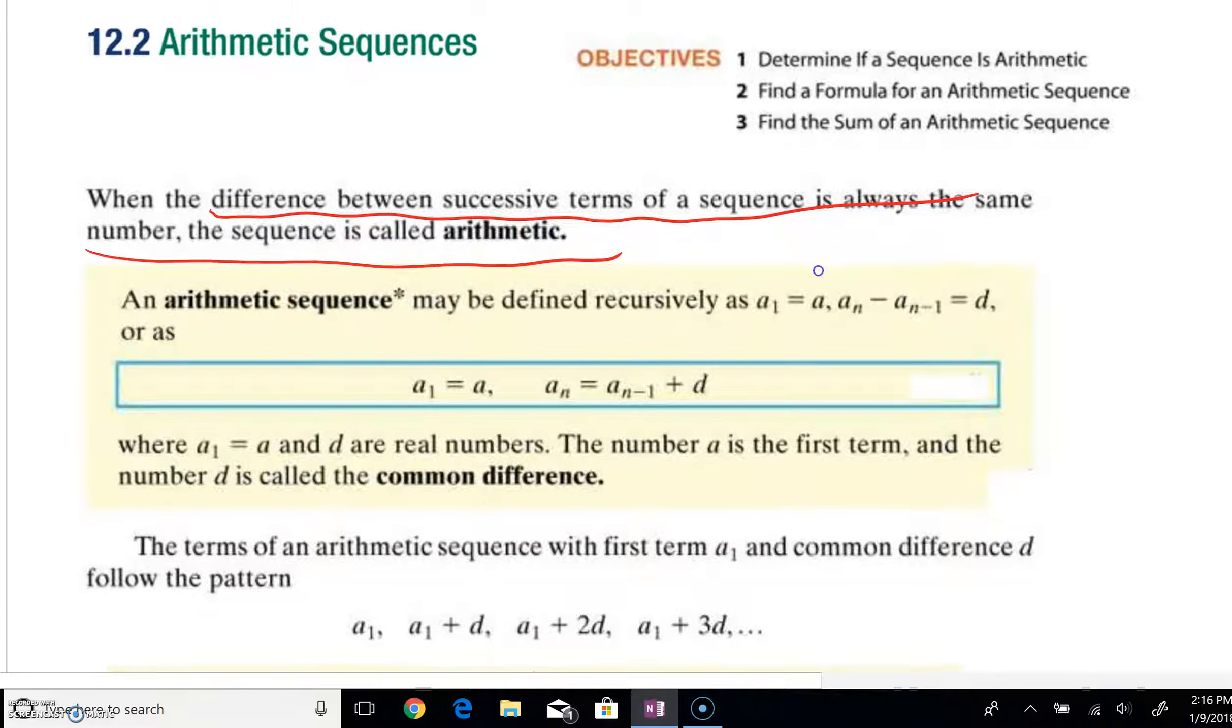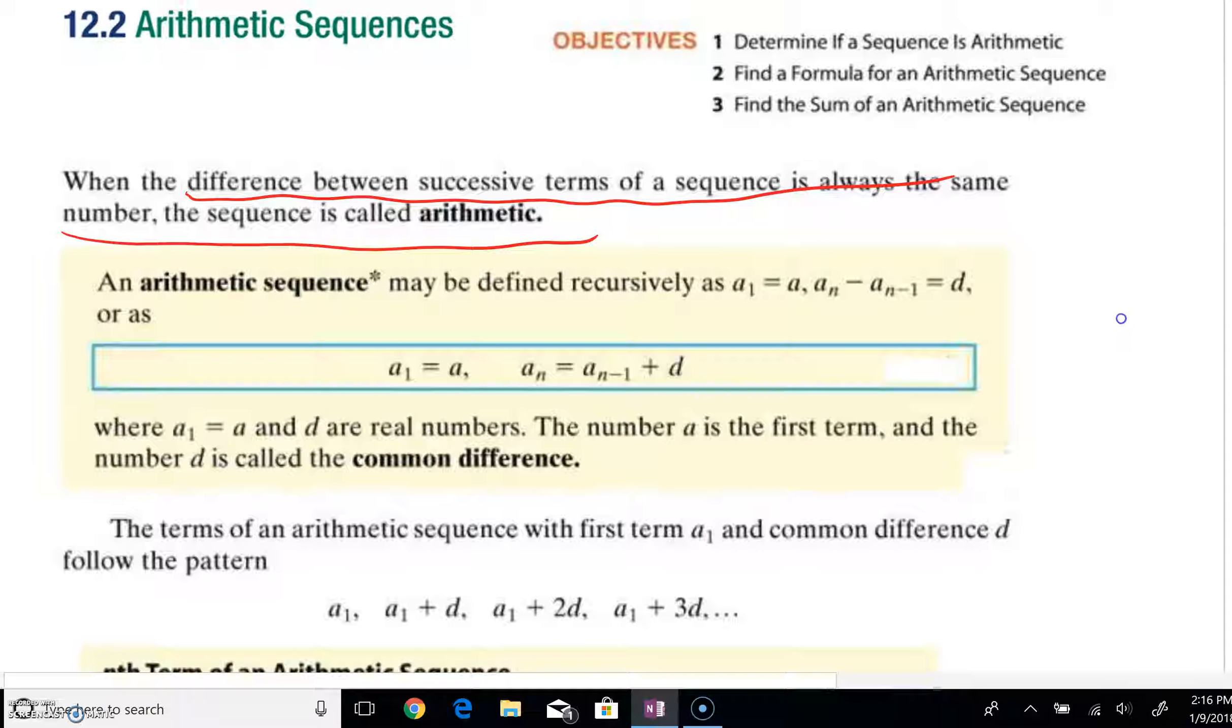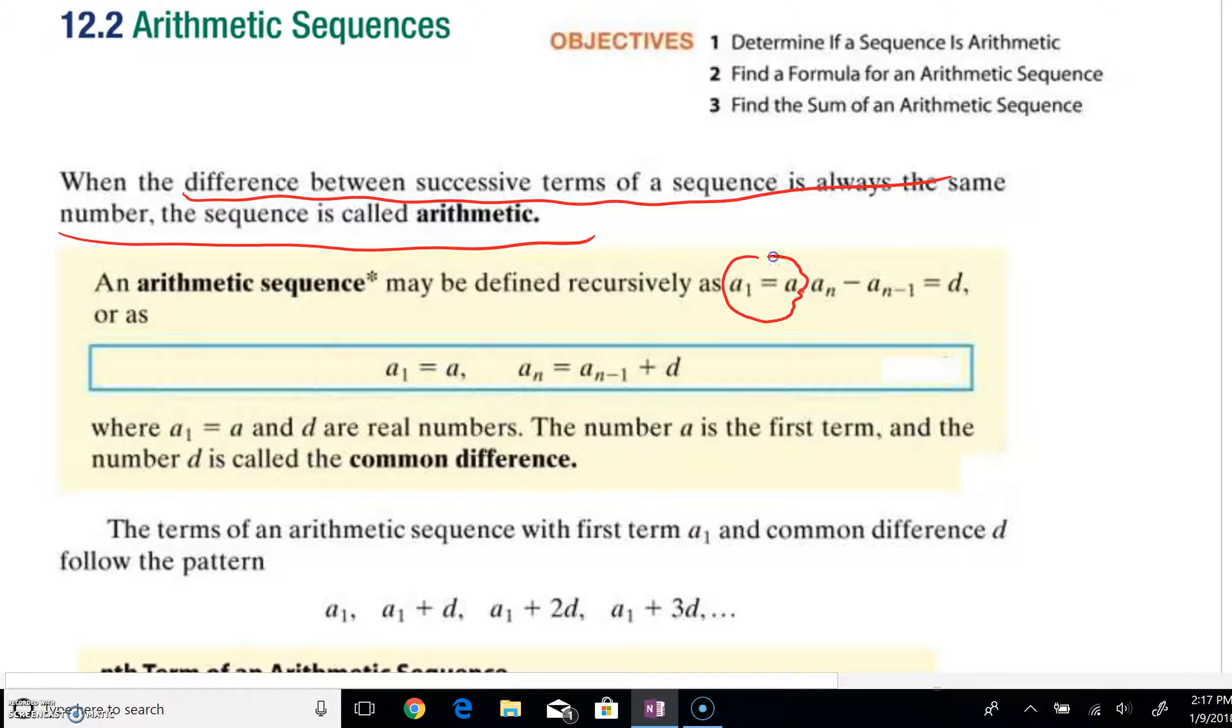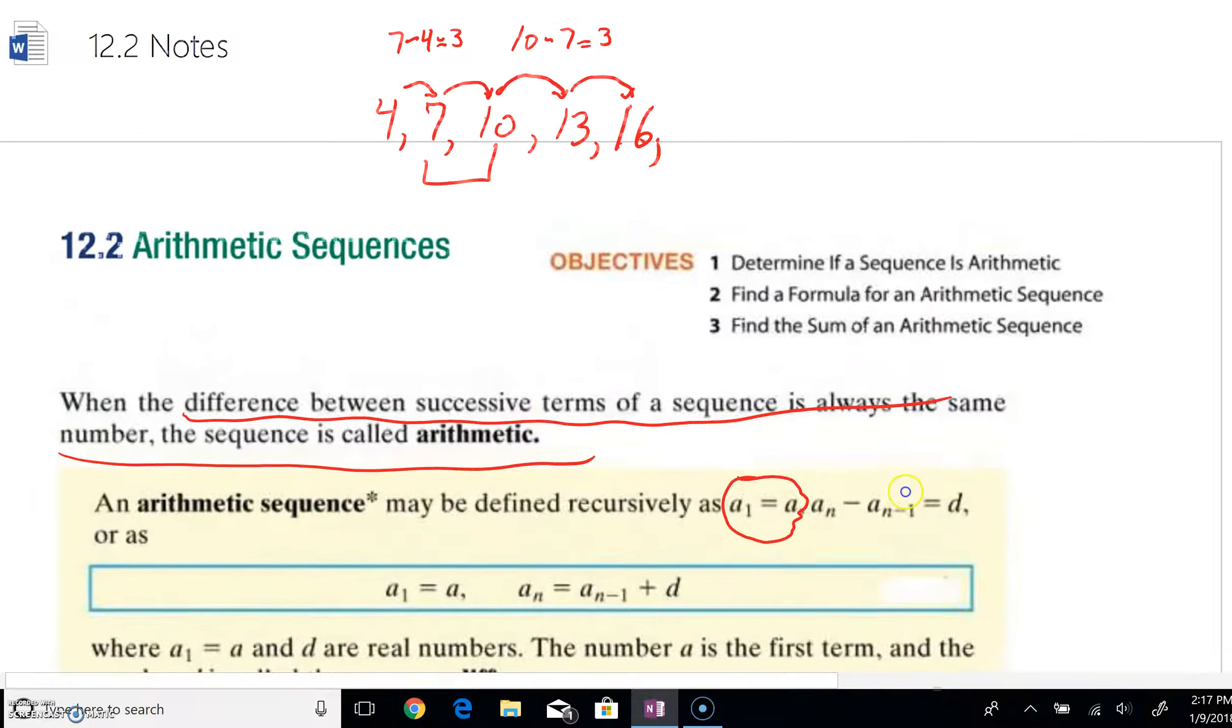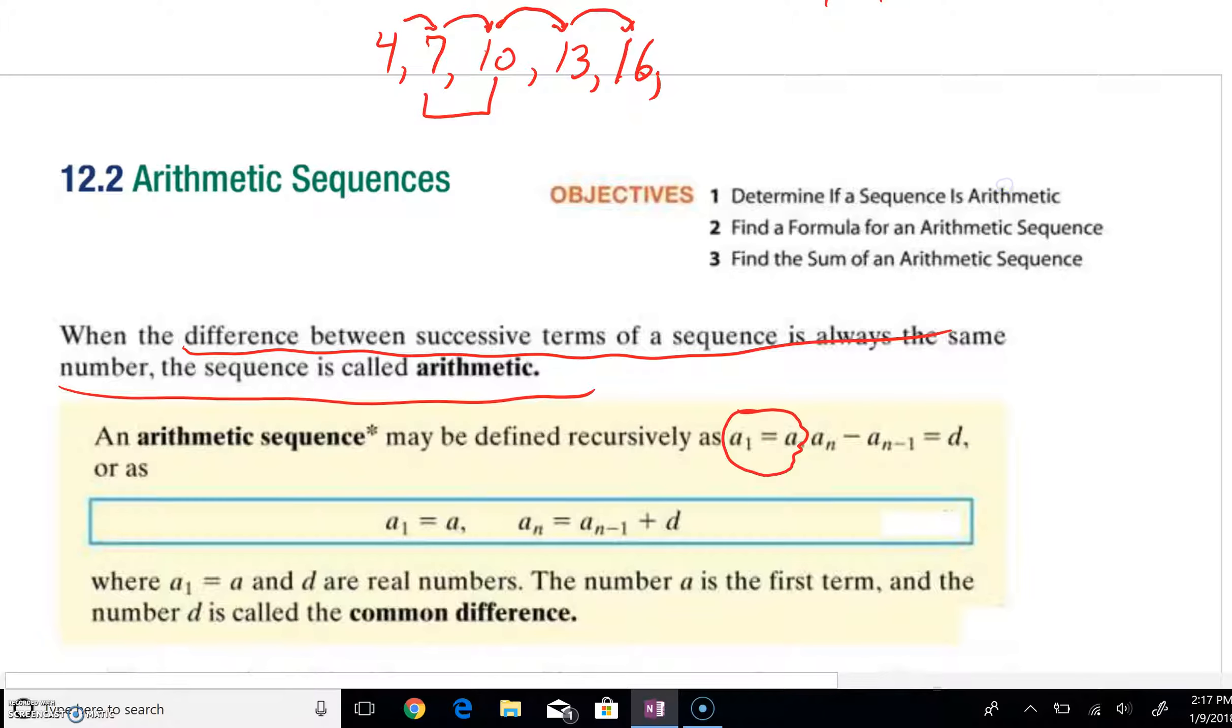So an arithmetic sequence, as we read in this yellow box, could be defined recursively. Now, to have a recursive definition, we must have a beginning. We must have a start. We'd say our first term is some value, and in the problem that we had up here, we could say a sub 1 would equal 4, for example. But, of course, a sub n minus a sub n minus 1 would equal d. That's that successive difference there, always being the same number.